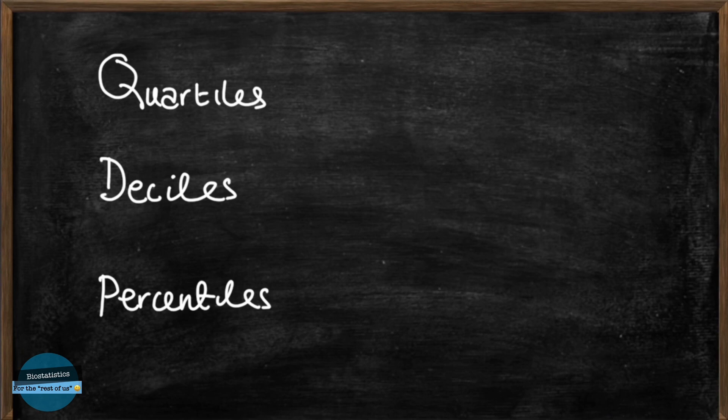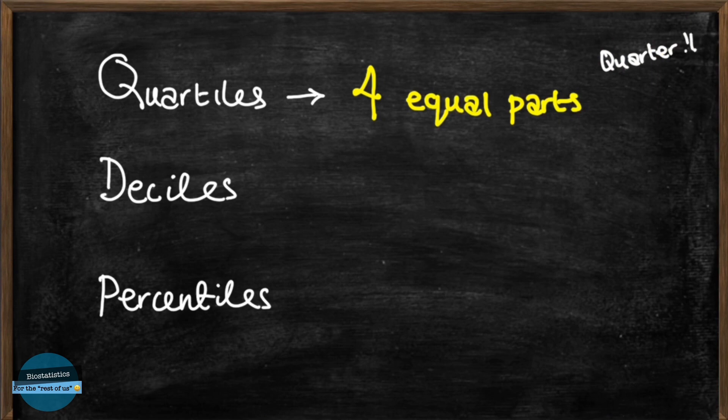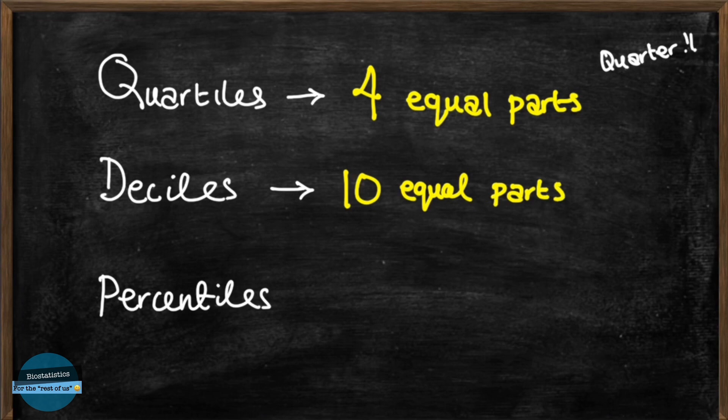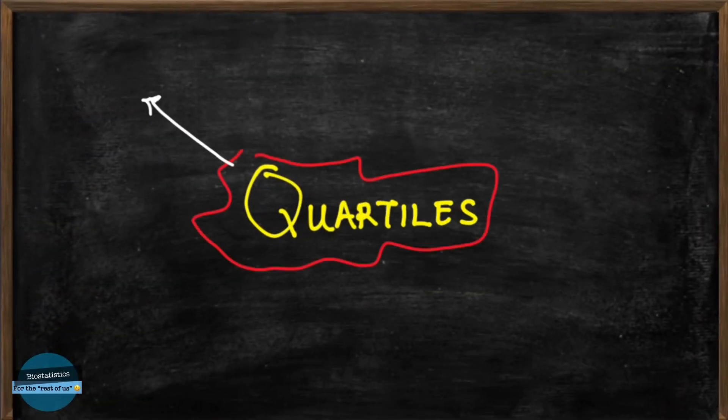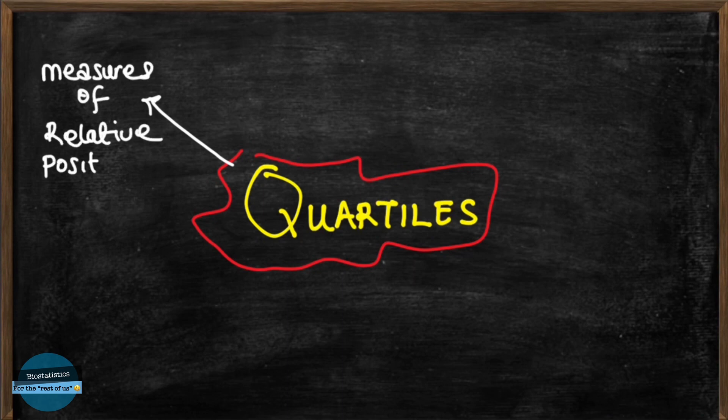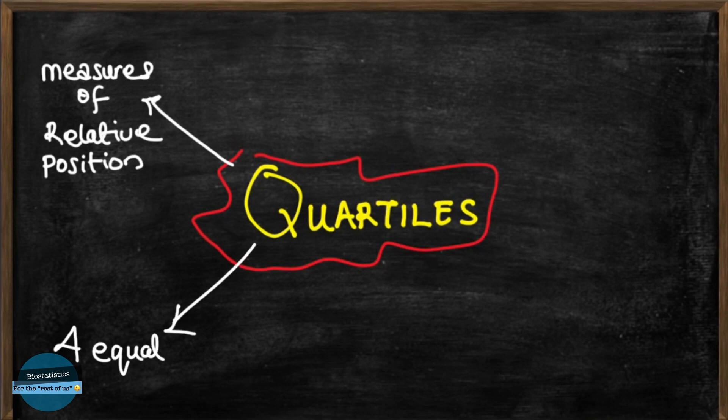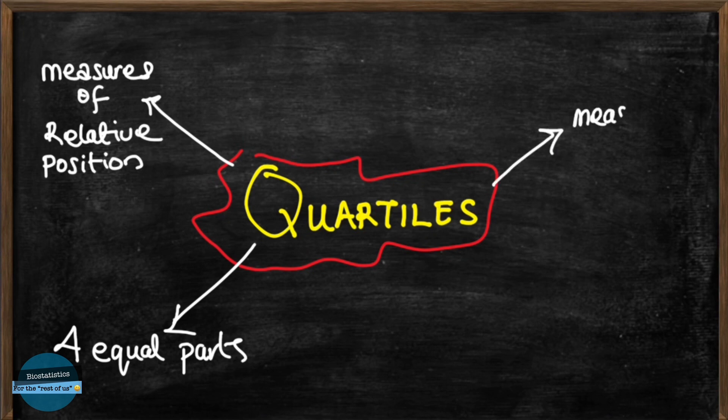Quartiles are used to divide the data set into four equal parts as the name implies. While deciles are used in statistics to divide a data set into ten equal parts and lastly percentiles help to divide the data into a hundred equal parts. Our focus in this video is on quartiles. Quartiles are referred to as measures of relative position because they demarcate positions that help us to identify values that divide the sorted data into four equal parts. Quartiles are not measures of center but measures of position.